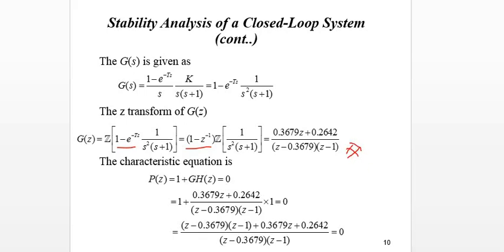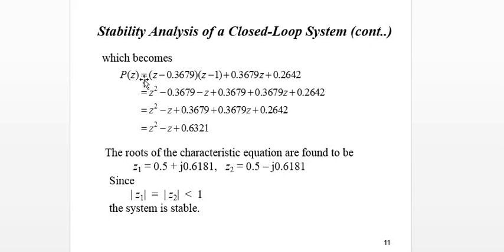Now we use the characteristic equation P(z) = 1 + G(z). Substituting G(z) and simplifying, P(z) becomes z² - z + 0.6321. Factorizing using a calculator, the roots are z₁ = 0.5 + j0.6181 and z₂ = 0.5 - j0.6181. Both roots are inside the unit circle, so the system is considered stable.